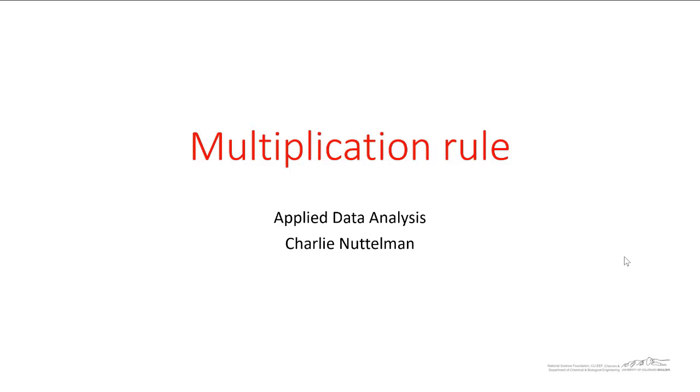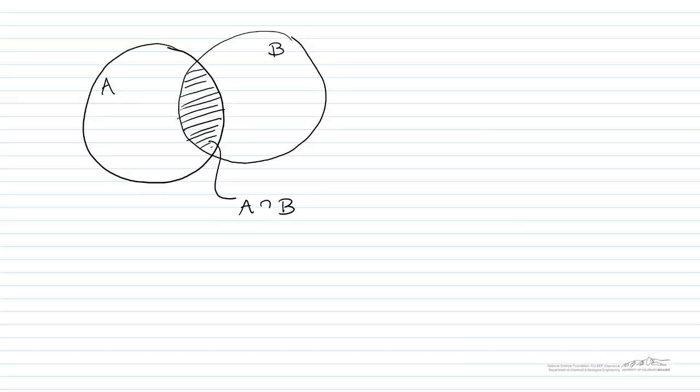This short screencast is going to explain the multiplication rule. Let's consider the following: we have two events that are not mutually exclusive. They have some sort of intersection — event A on the left, event B on the right.